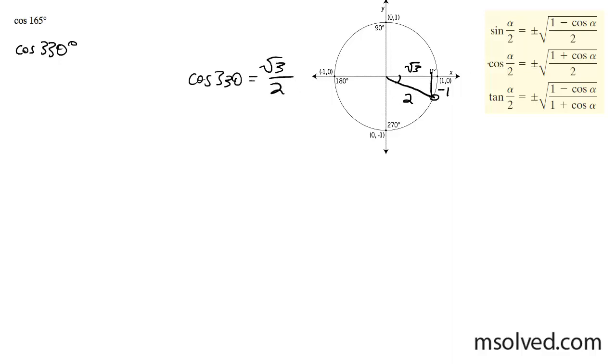And as a result, I'm going to use this formula right there. So I'm going to come down here. So the cosine of 165 degrees is going to be equal to, it's going to be negative in this case, because the half angle is going to be roughly right here.